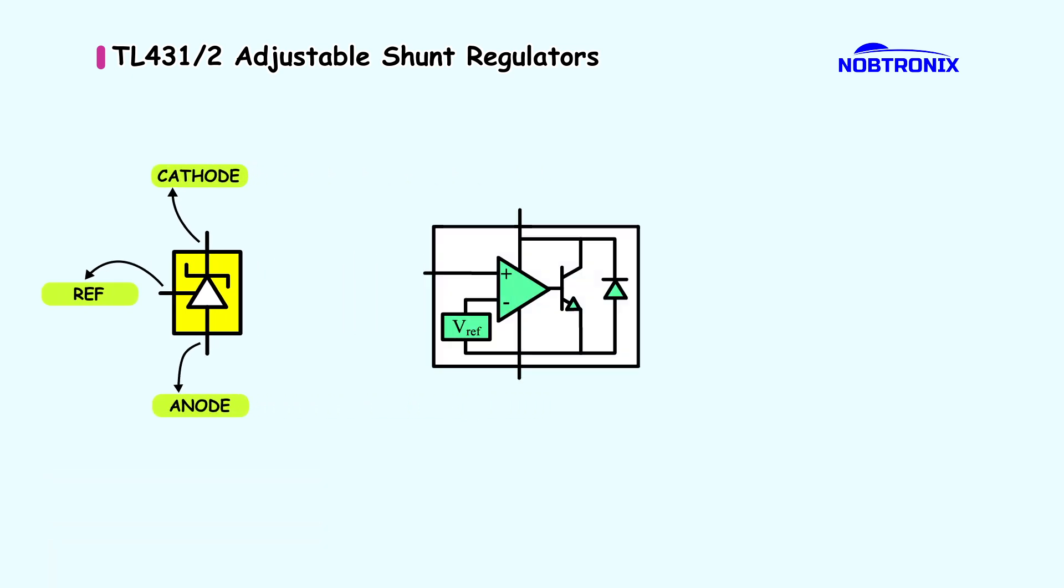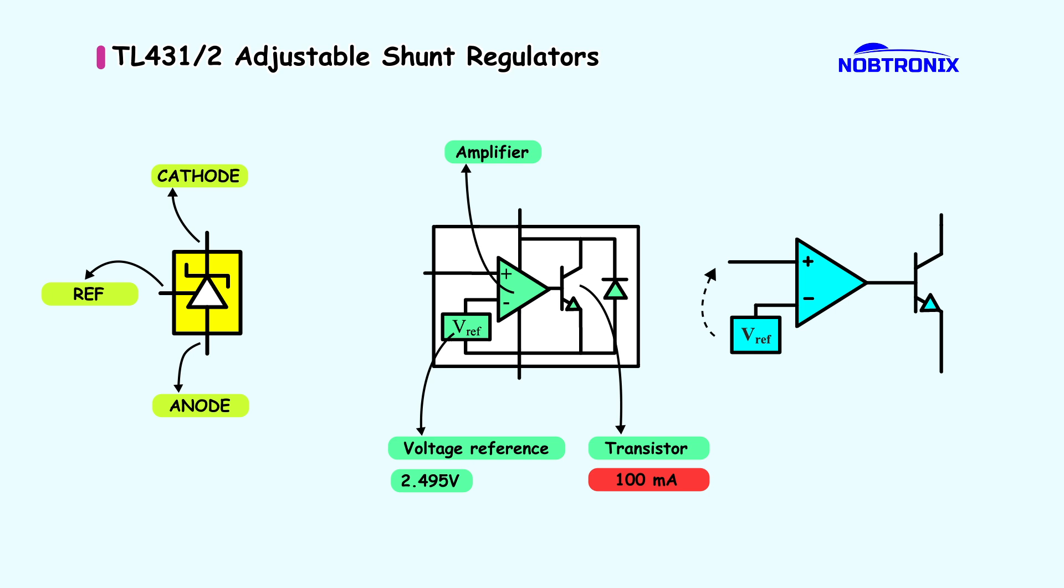At its core, it consists of a 2.495V voltage reference, an operational amplifier, and a transistor capable of sinking up to 100 mA. The error amplifier compares the voltage at the reference pin to its internal reference. Based on this difference, the transistor adjusts its sinking current.